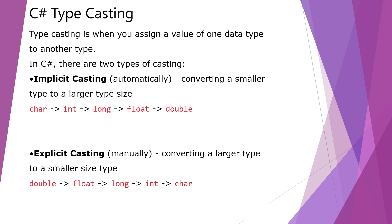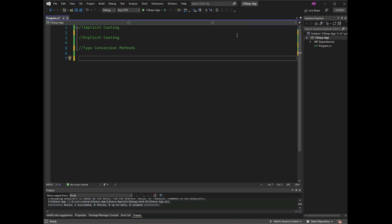Implicit casting is automatically converting a smaller type to a larger type size. Explicit casting is manually converting a larger type to a smaller size type. Implicit casting is done automatically when passing a smaller size type to a larger size type.